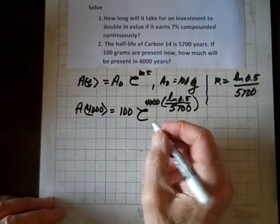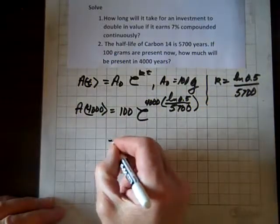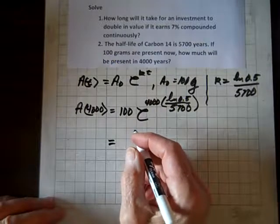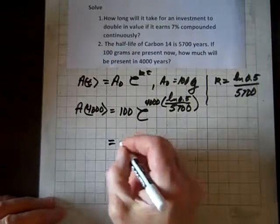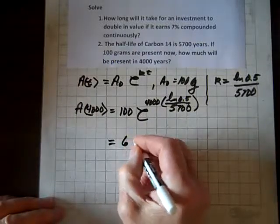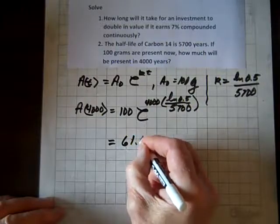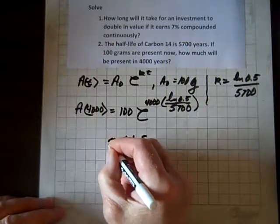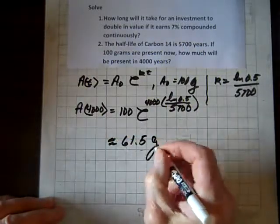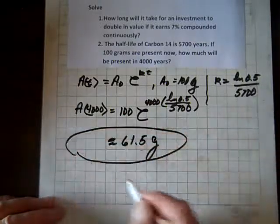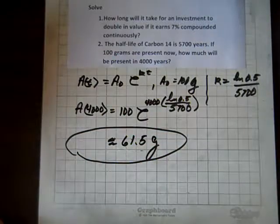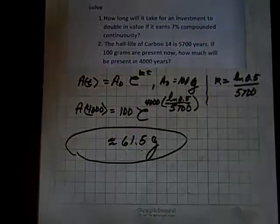And now, this is just a matter of running this through the calculator. And when I did that, I wind up with 61.5, and that's approximately grams. And that's how much of that original 100 grams will be left after 4,000 years. And we're done.